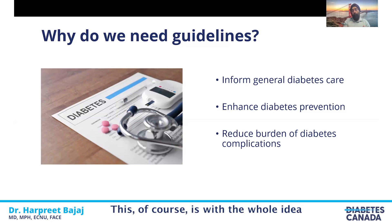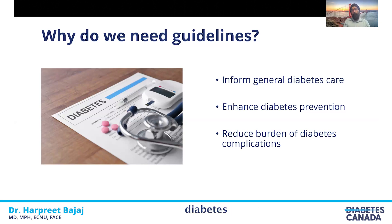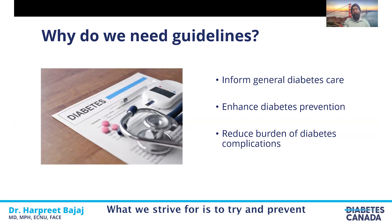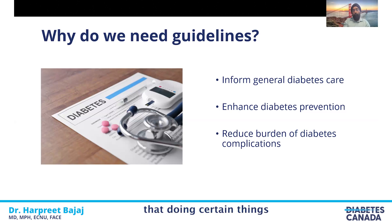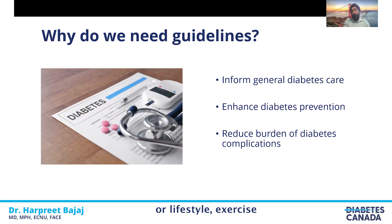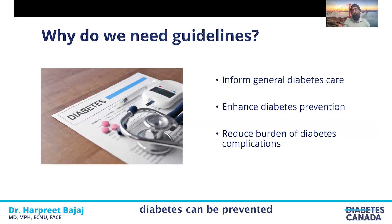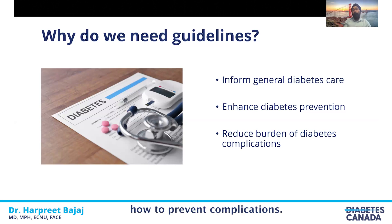The goal of developing these guidelines is to try and prevent diabetes from progressing or happening in people who don't yet have it. There is a lot of research showing that behavior modifications — such as dietary changes or lifestyle and exercise changes — can prevent diabetes in people who are at high risk. The other goal is for people living with diabetes: how to prevent complications.